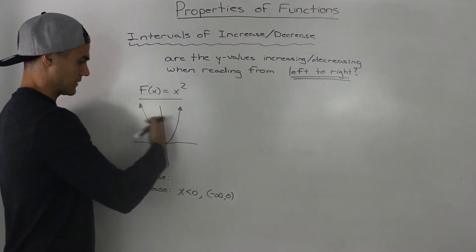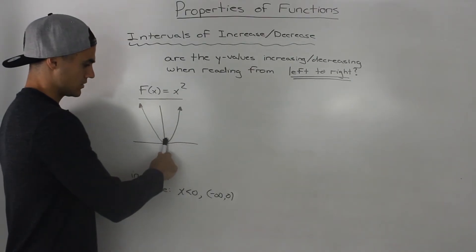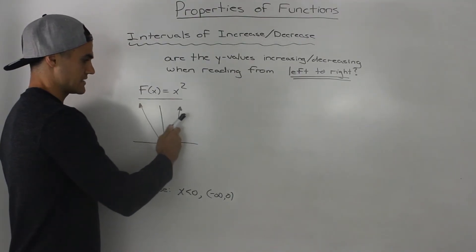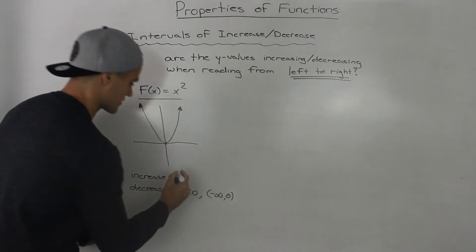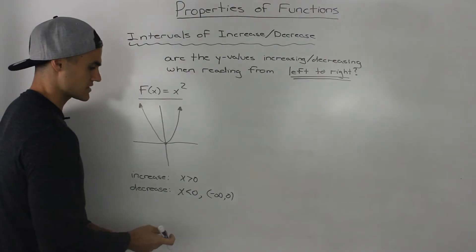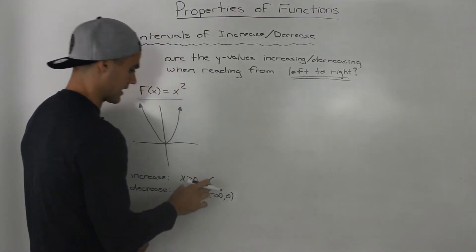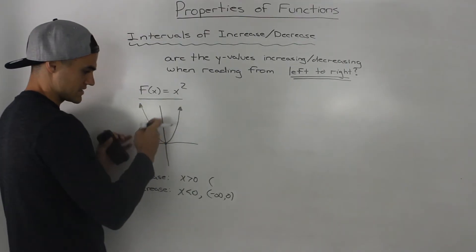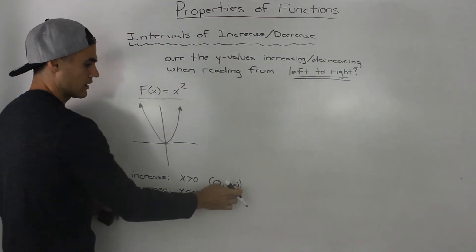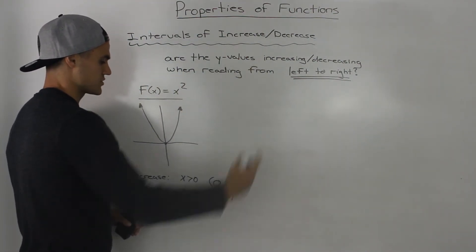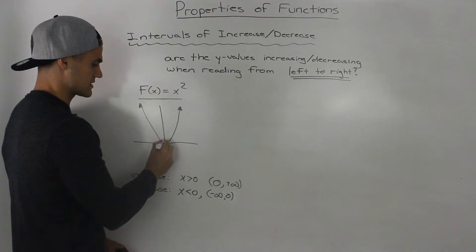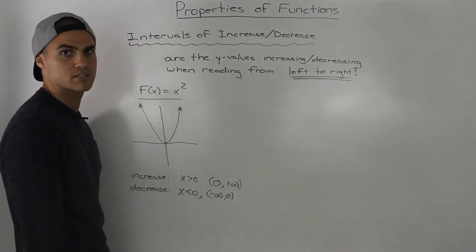Continuing to read the graph from left to right after zero, notice how the y values are getting bigger — so the function is increasing when x is greater than zero. The interval of increase is when x is greater than zero. In interval notation, from zero to positive infinity, the function increases forever after zero. Again, zero is not inclusive because it's a minimum point — neither increasing nor decreasing at that point.